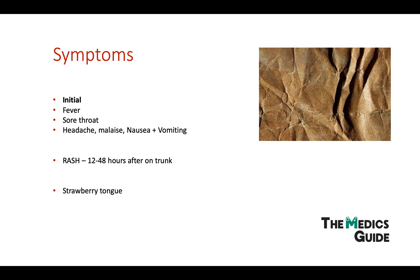Just like in Kawasaki's disease, you can get a strawberry tongue. The tongue usually has a white coating on it, and as the infection progresses the coating disappears, leaving quite a beefy red appearance. You can also get lymphadenopathy, and circumoral pallor — a paleness around the mouth. You may also notice that the patient has quite a red face, but it's important to know that it's not the rash.